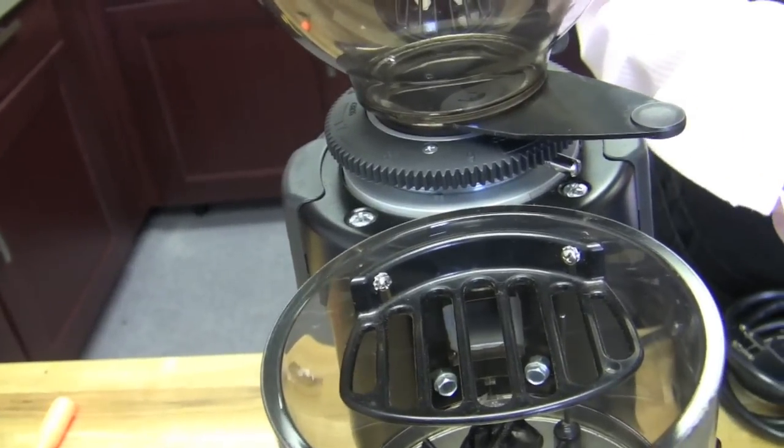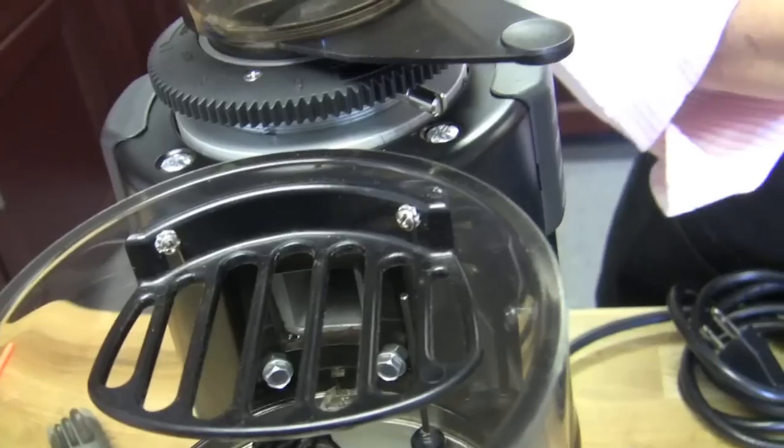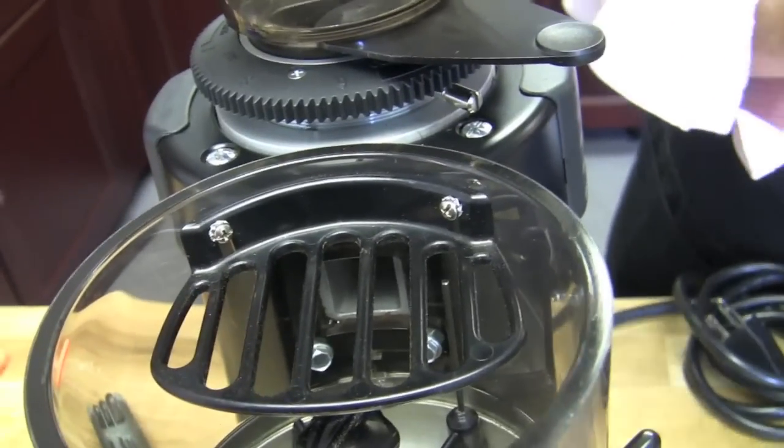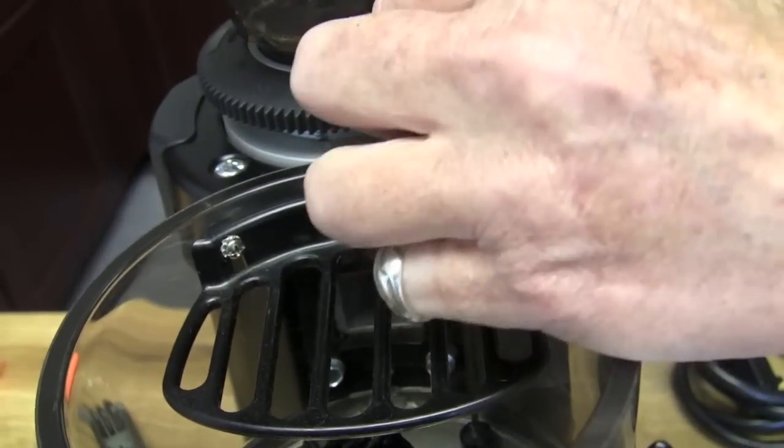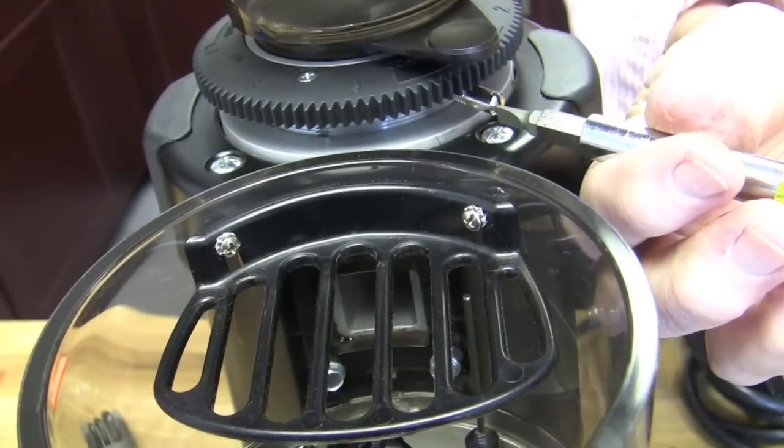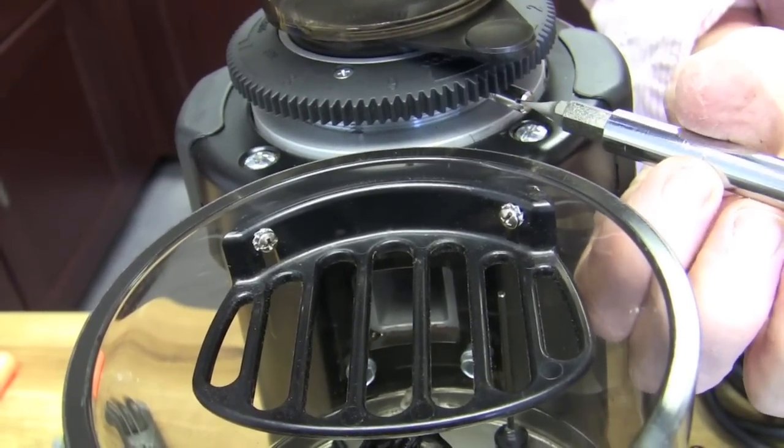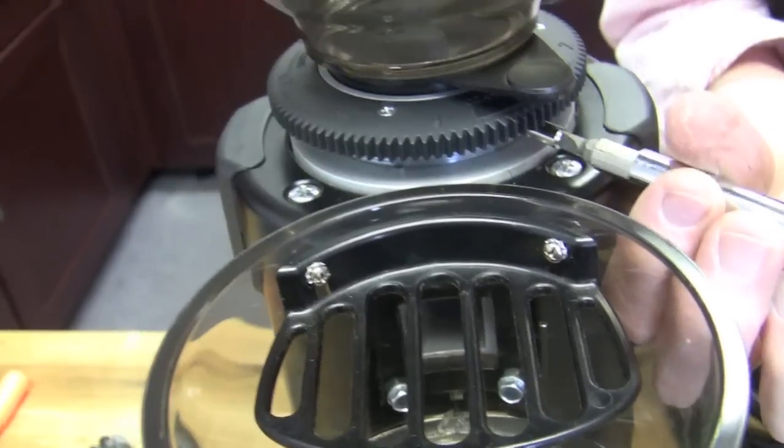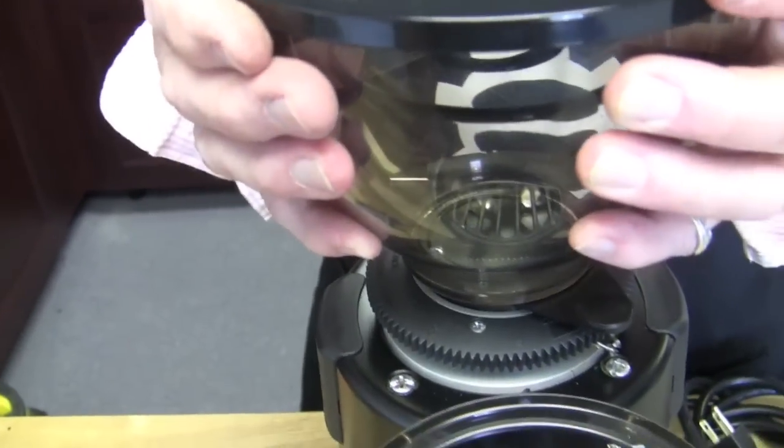Basically the only thing we got left to do after that is to put the bean hopper on, and if you want the bean hopper to lock in, you've got to put the hole down correctly. Line this up to that. Put it back in with your flat blade. This is that gate valve. I prefer these to be loose than you can just take the bean hopper off at will.